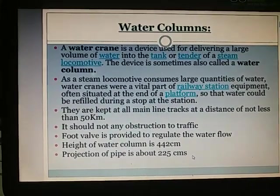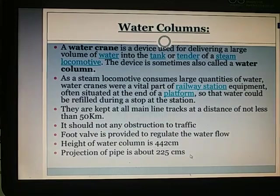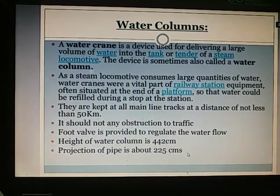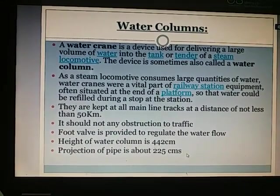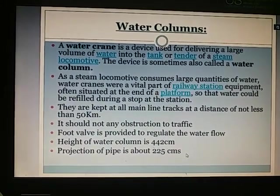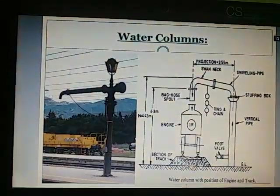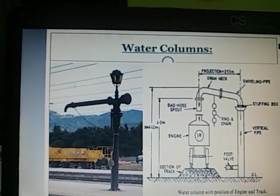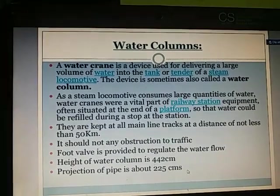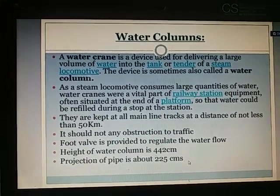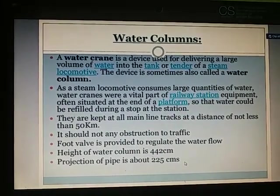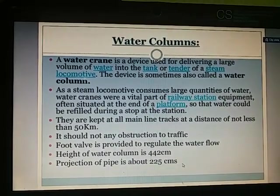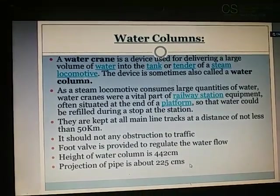Water column: A water crane or water column is a device used for delivering a large volume of water into the tank of a steam engine. As a steam engine consumes a large quantity of water, water cranes are a vital part of railway station equipment, often situated at the end of the platform. They are kept at all main line tracks at a distance of not less than 50 km. A foot valve is provided to regulate the water flow. The height of the water column is 442 cm and the projection of pipe is about 225 cm.